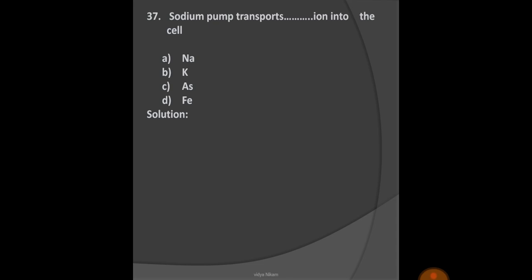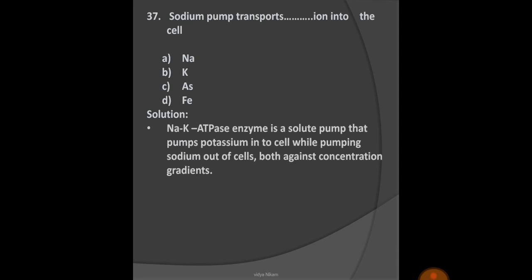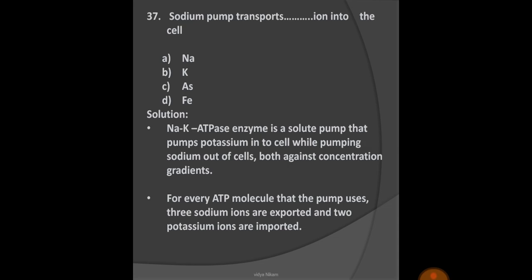Next question: Sodium pump transports which ion into the cell? Options: A) Sodium, B) Potassium, C) Arsenic, D) Iron. We know that sodium-potassium ATPase enzyme is a solute pump that pumps potassium into the cell while pumping sodium out of the cell, both against concentration gradient. For every ATP molecule that the pump uses, three sodium ions are exported and two potassium ions are imported. So option B, potassium, is the right option.